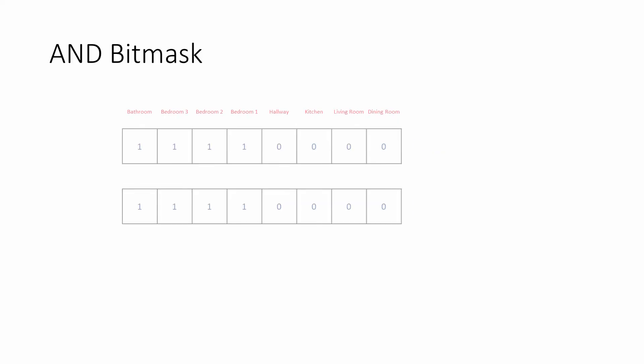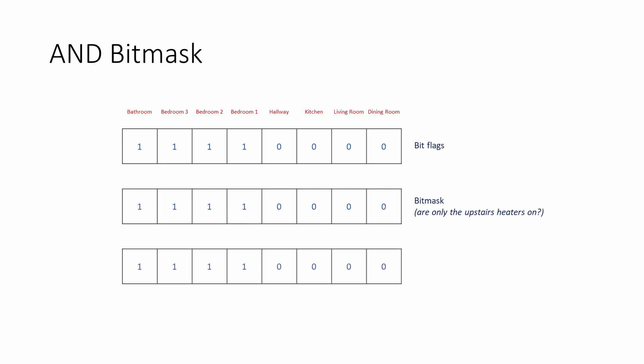In this example, a bit mask is being used to check to see if all of the heaters in the upstairs rooms are on, assuming that's where the bathroom and the bedrooms are located in the house. If the byte that results from ANDing the bit flags with the bit mask is identical to the bit mask, then we know that all of the upstairs rooms and only the upstairs rooms have their heaters switched on. Here's some pseudocode to do this programmatically.